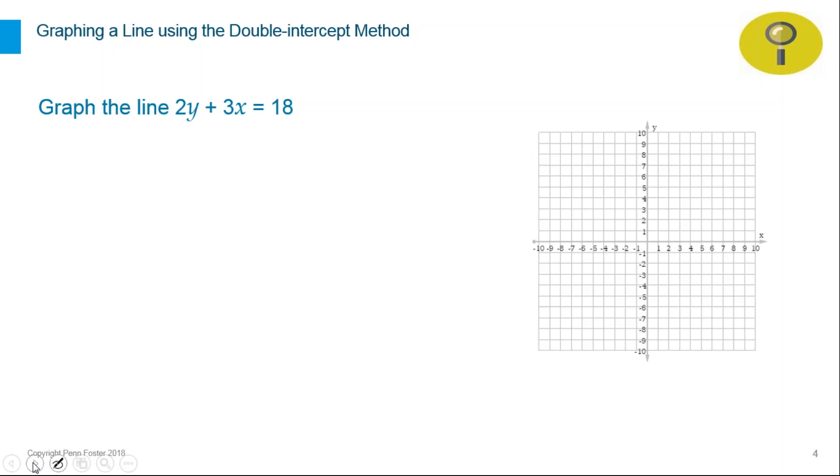Let's look at an example. Graph the line 2y + 3x = 18. Using the double intercept method, we need to find the two points where the straight line intersects the y-axis and the x-axis. Let's follow those four steps. One, we need to find the y-intercept by setting x = 0.